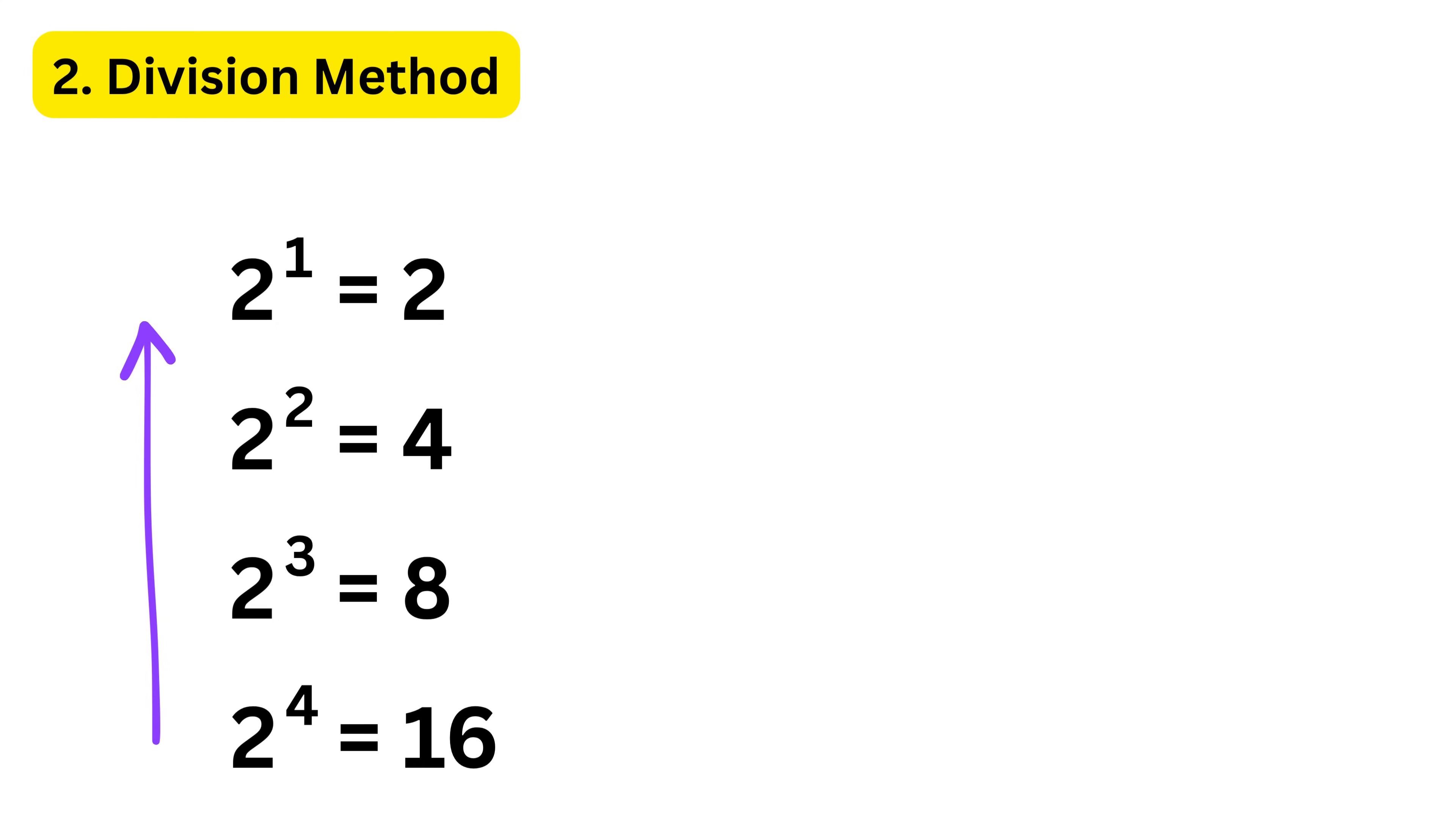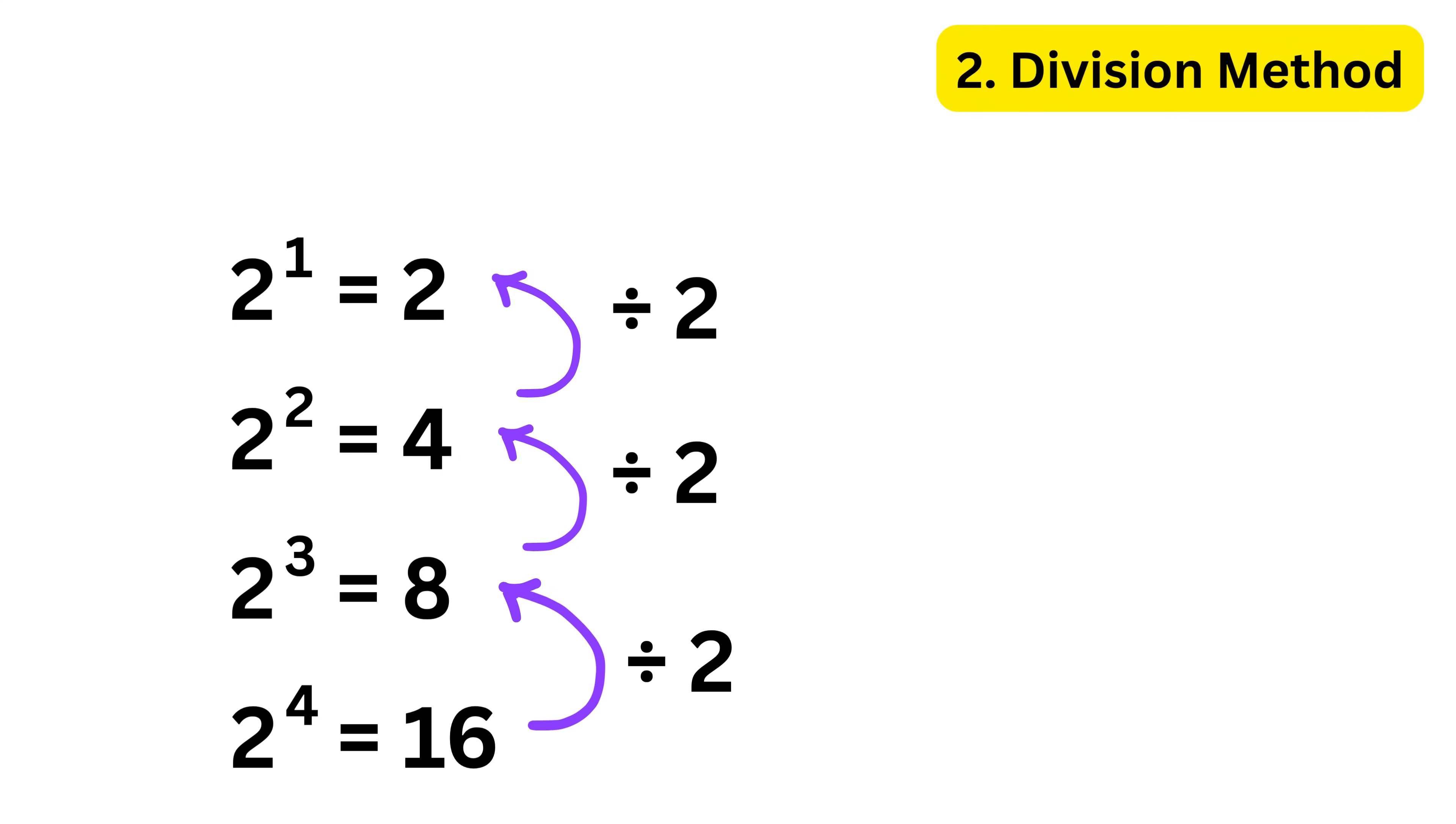Now if we go in the reverse direction, we divide instead of multiply. So 2 to the 4th, or 16, divided by 2 is 2 cubed, or 8. Then 2 cubed, or 8, divided by 2 is 2 squared, or 4. Then 2 squared, or 4, divided by 2 is 2 to the 1, or simply 2. So if we keep going back like this, then 2 to the 1, or 2, divided by 2 will be 2 to the 0, or 1, right?